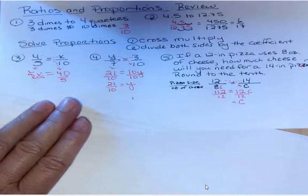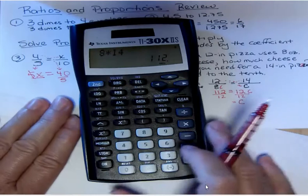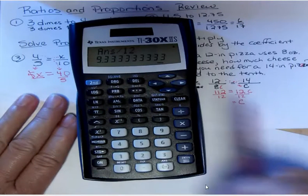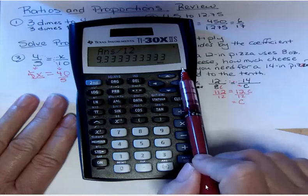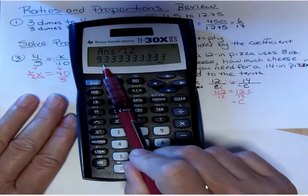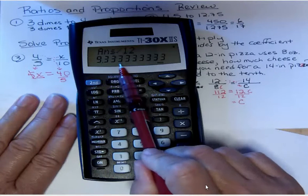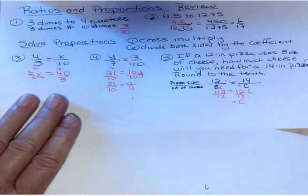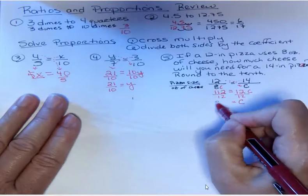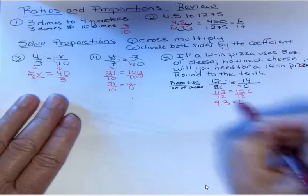So let's take 112 and divide by 12 and then round that to the tenth. Do you see how we get 9.3 repeating? If I want to round to the tenth, that's the first three. The next number is also three, so it's gonna round down, it's not gonna go up, it's gonna stay as a three. So rounded, my answer is 9.3. It would take 9.3 ounces of cheese to make that pizza.